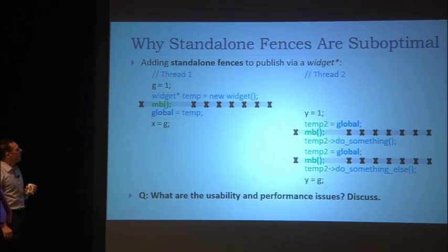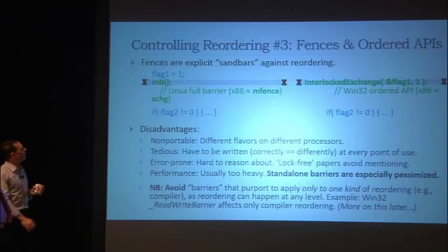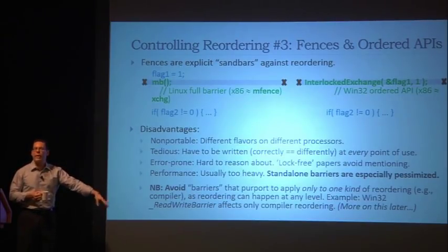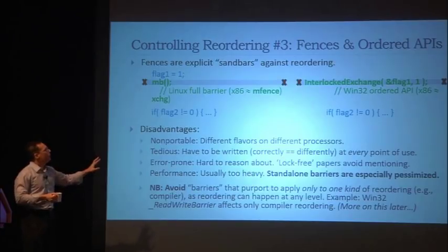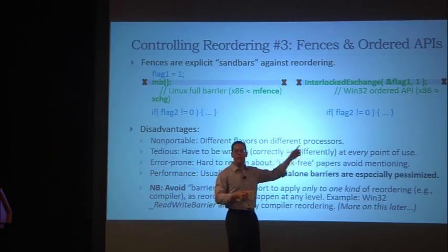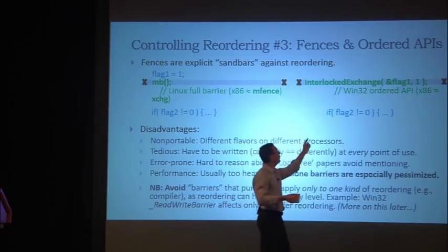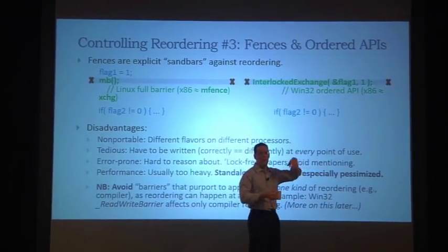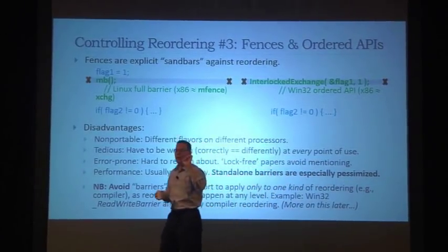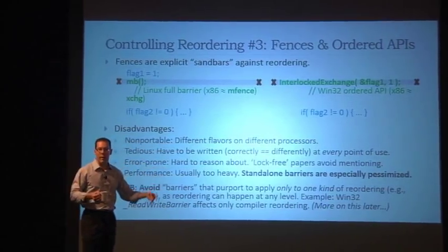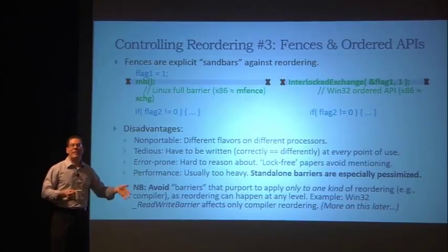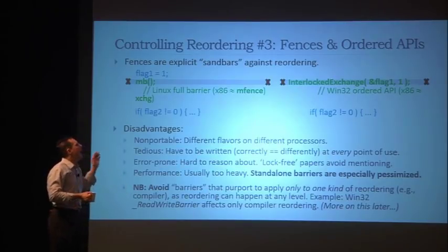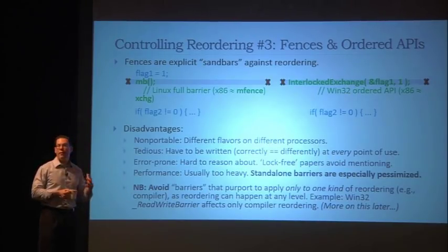Another question: I mentioned fences together with ordered APIs. These are really a bucket of things you should try to avoid, using mutexes and atomics instead. But the ordered APIs are actually better than the standalone fences. When you do an interlocked exchange, the synchronization fence is associated with the store, which is much better than what we had with the standalone barrier. However, it still has a problem: it's a full barrier.